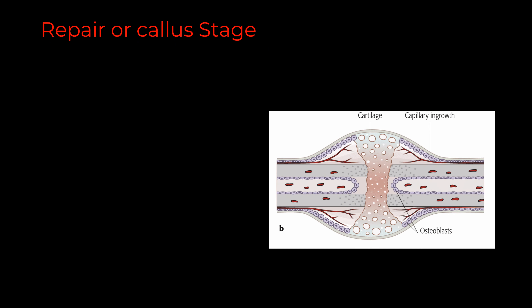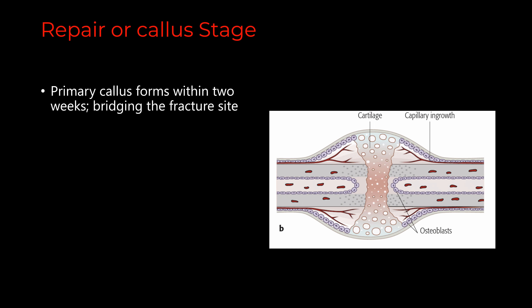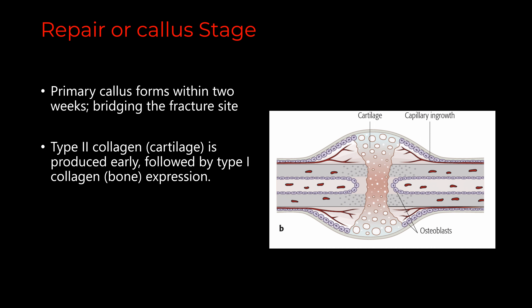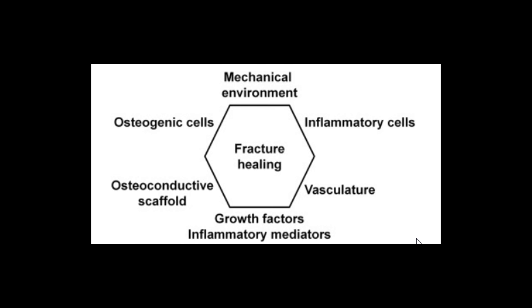The next stage is called the stage of repair, or callus formation. Primary callus forms within two weeks, bridging the fracture site. The predominant collagen in the early soft callus is type 2 collagen, which is later replaced by type 1 collagen. The medullary callus supplements this bridging periosteal soft tissue callus. The amount of callus is inversely proportional to the extent of immobilization. Providing mechanical stability at this stage is very important, as adequate mechanical stability determines differentiation toward osteoblastic nature, thereby ensuring adequate healing of the bone.